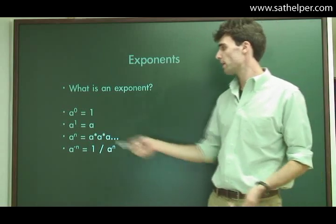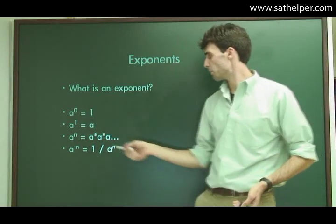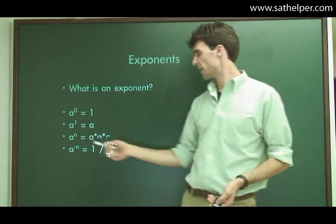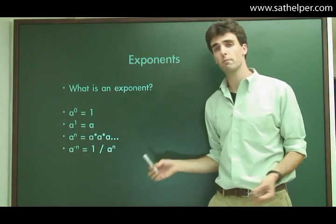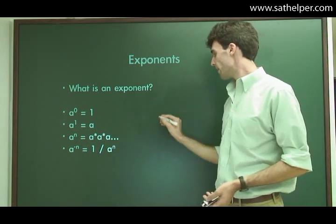So how do exponents work? Any number to the 0 is 1. Any number to the 1st power is itself. And as I just wrote, any number to the nth power is that number multiplied by itself n times. Any number to the negative n...